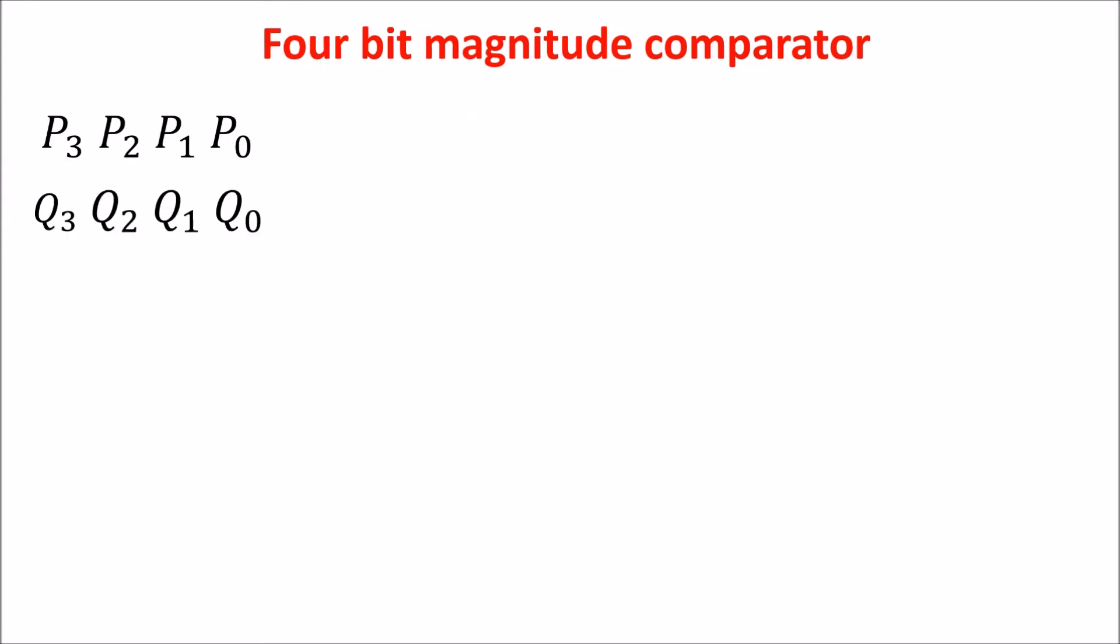Now we want to build an unsigned 4 bit comparator. Let's see how we can do. First, in order to have the two numbers equal, this relation must be true. So each bit of a number must be equal to the corresponding bit of the other number.